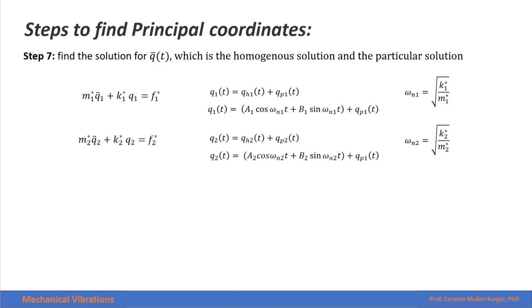Now that we have two independent equations, we solve them as one degree of freedom systems. The solution for each equation is the homogeneous solution plus the particular solution. The homogeneous solution for an undamped system has this form, and the particular solution depends on the external forces applied. The natural frequency of this system is the square root of the equivalent stiffness divided by the equivalent mass. You will see that this natural frequency is the same one found in step two when we computed the eigenvalues. The same applies to the second equation, whose natural frequency is also the second natural frequency from the eigenvalue problem.